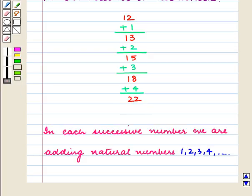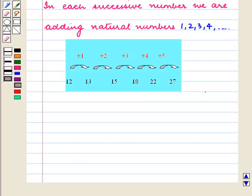So we see that in each successive number, we are adding natural numbers 1, 2, 3, 4 and so on.